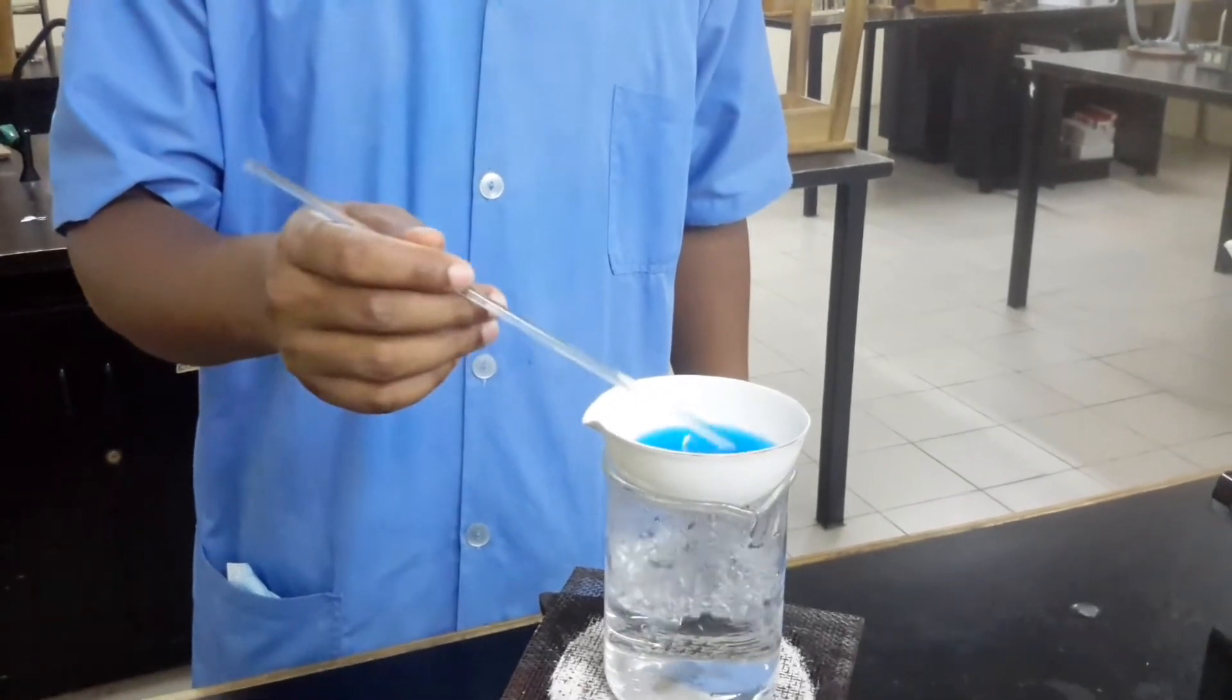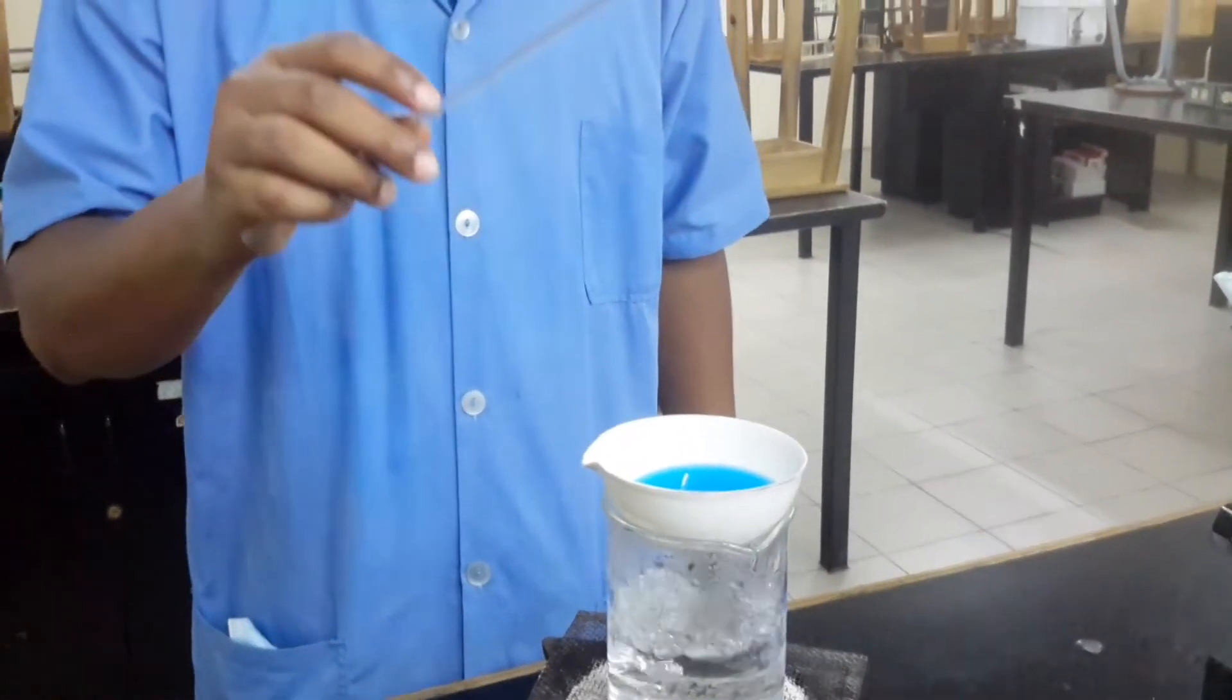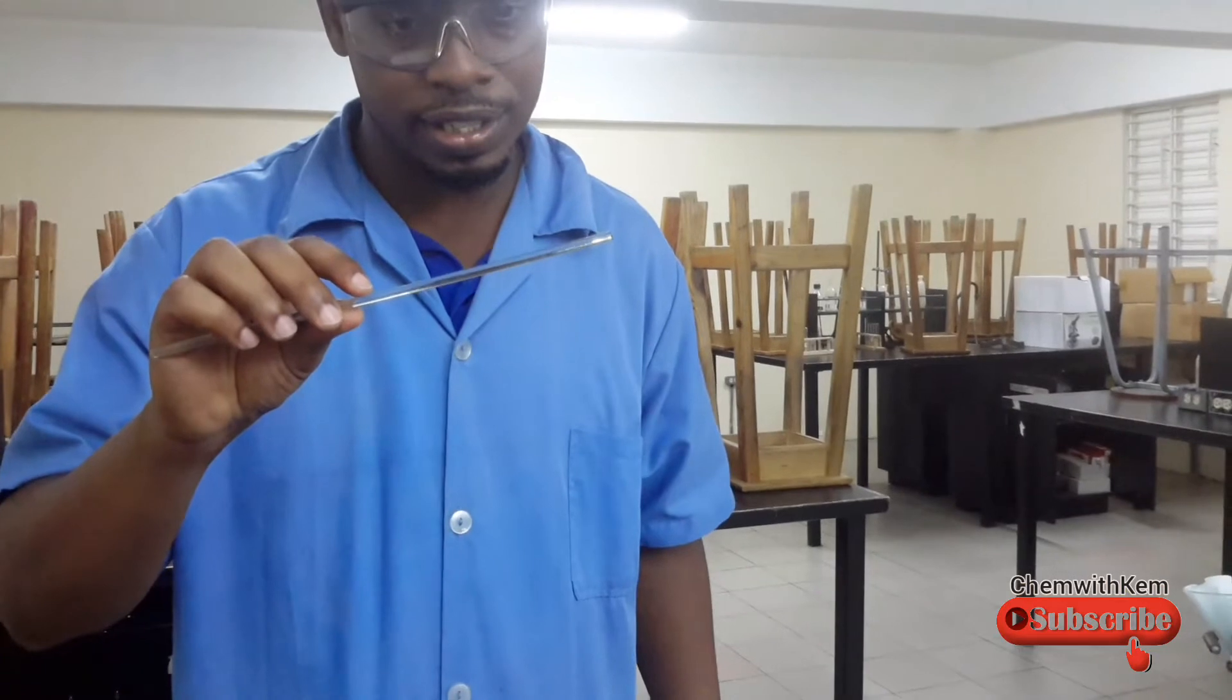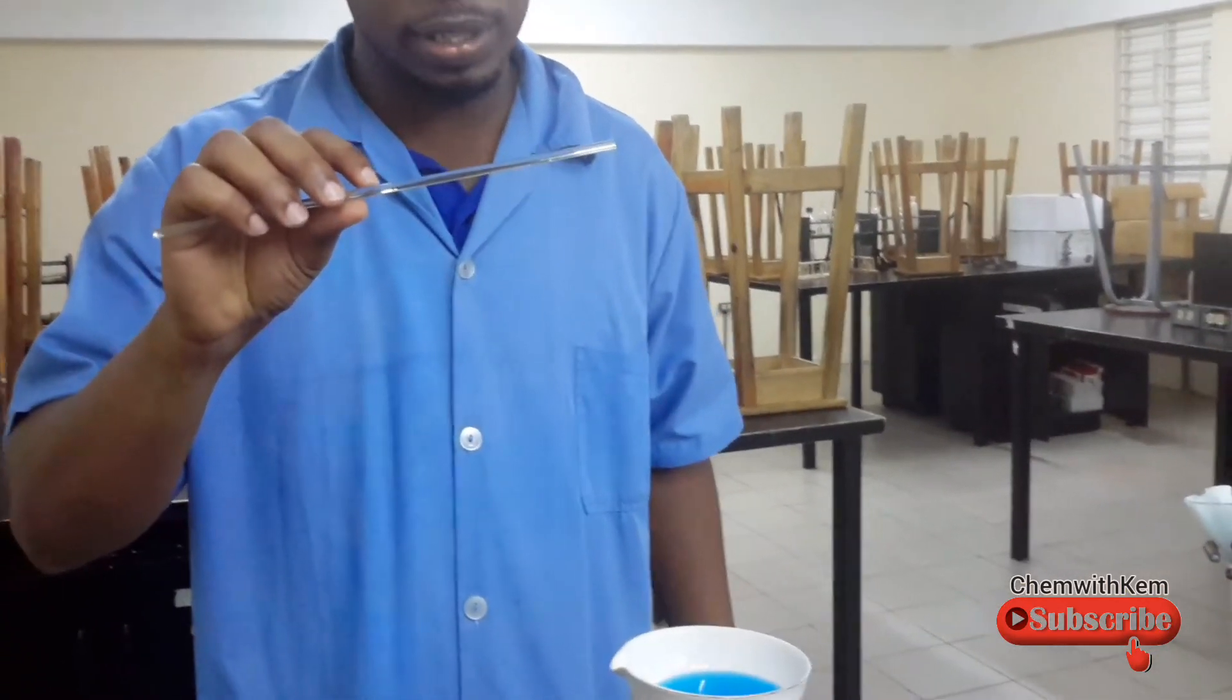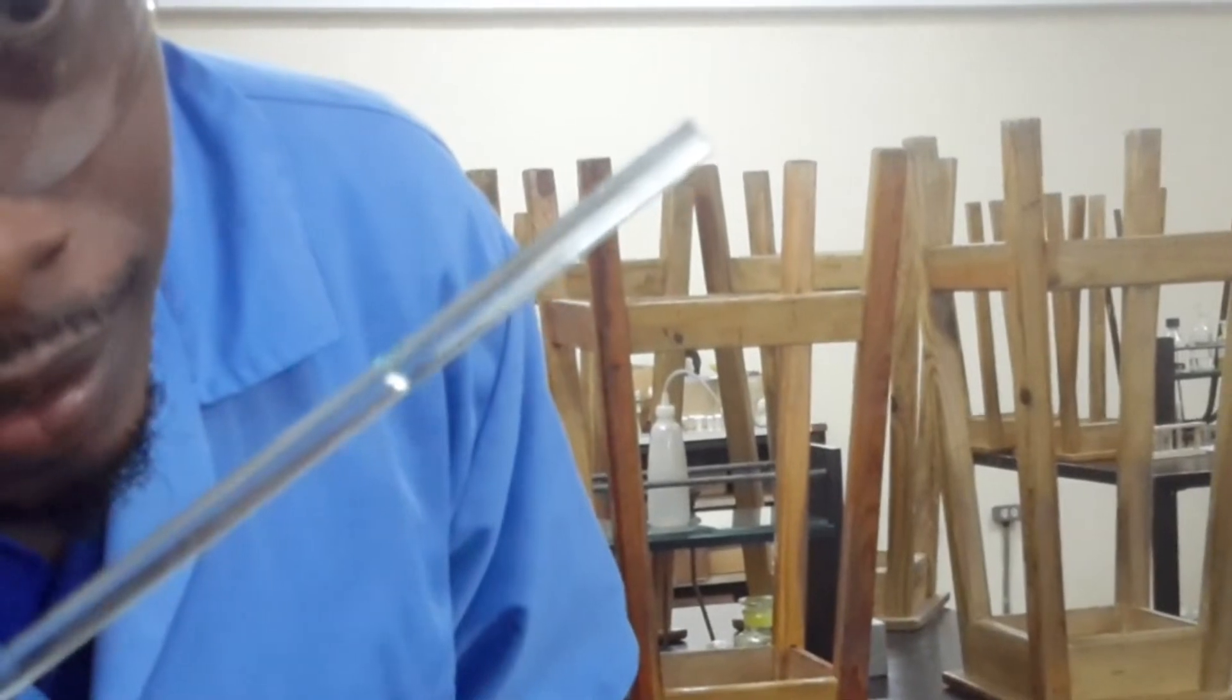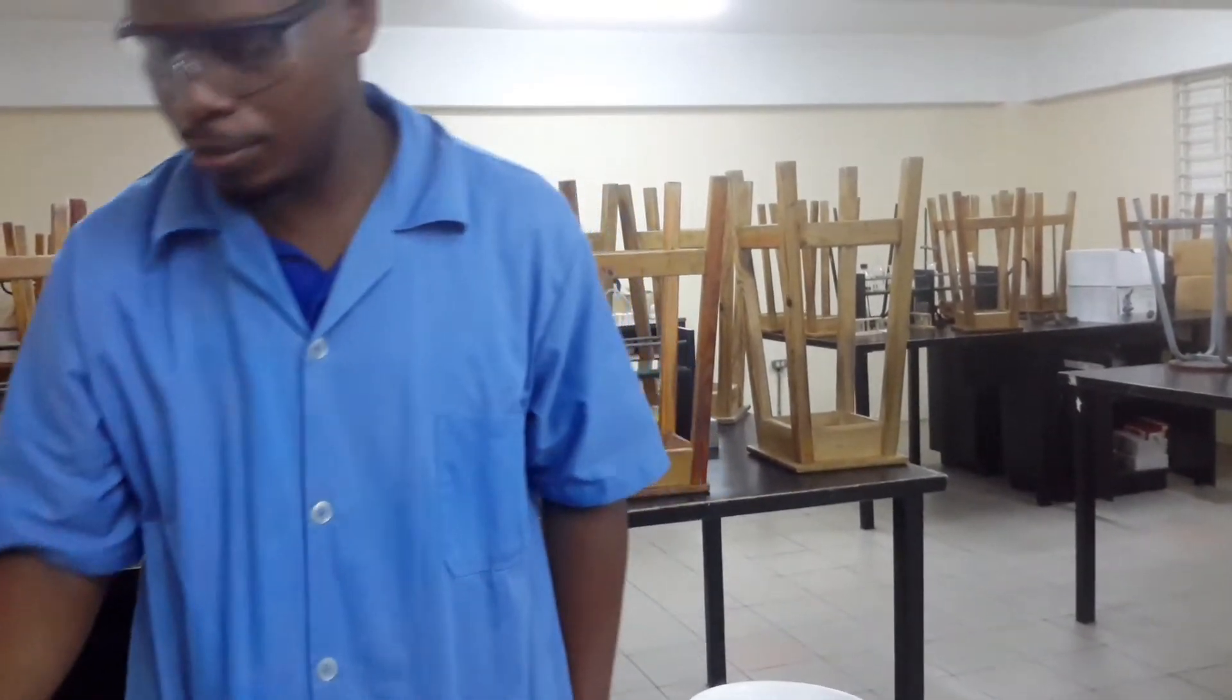We're just checking for crystallization. We'll just dip and then we'll just hold it up. Let it cool. And if when it cools we see crystals, then we can turn off the flame and just let the solution cool so the crystals can form. Not seeing, are we seeing any crystals there? We'll just let it sit for a while. Let me check it when it's fully cooled.